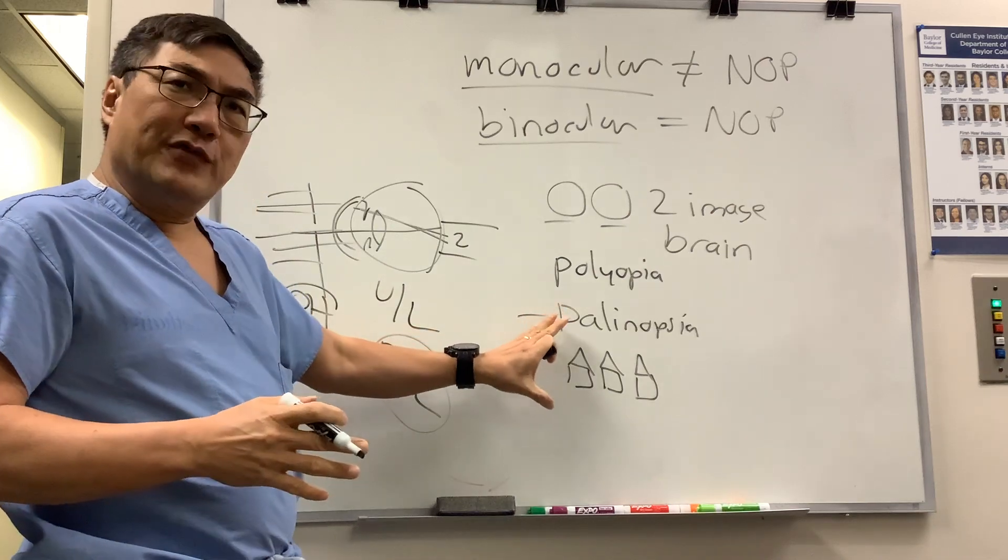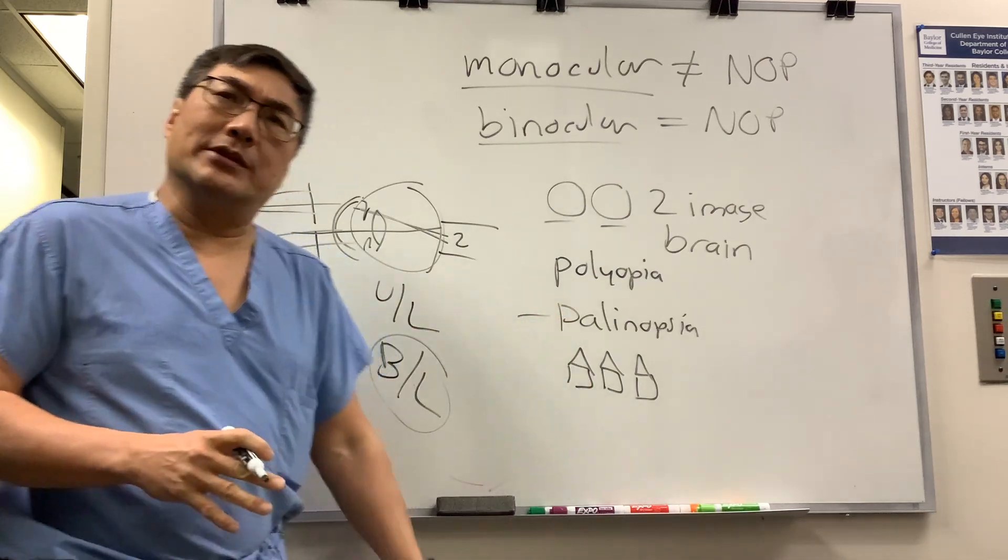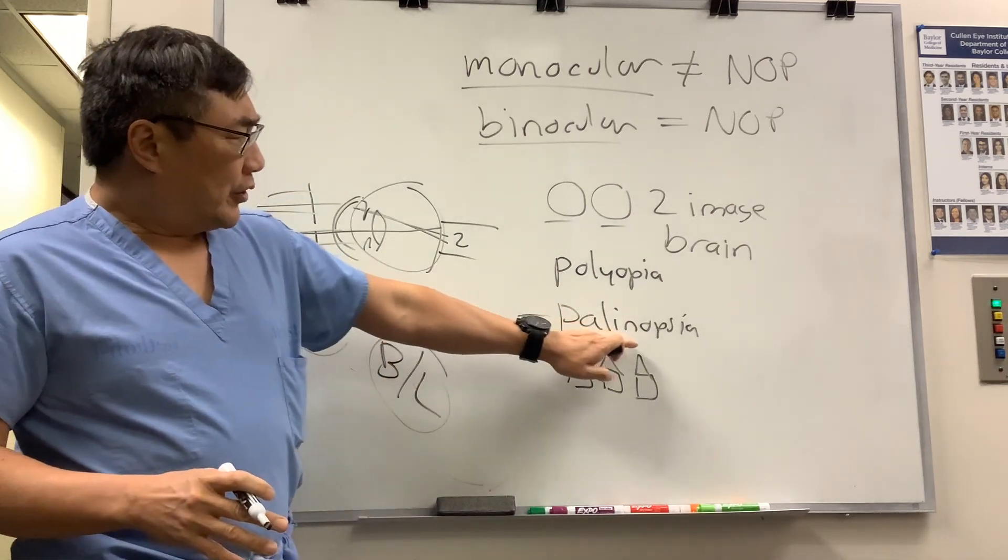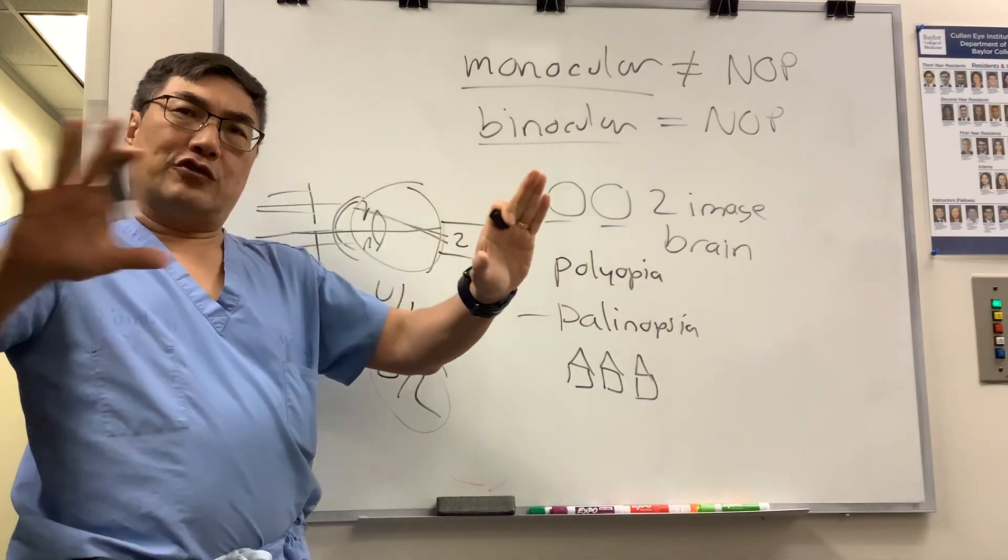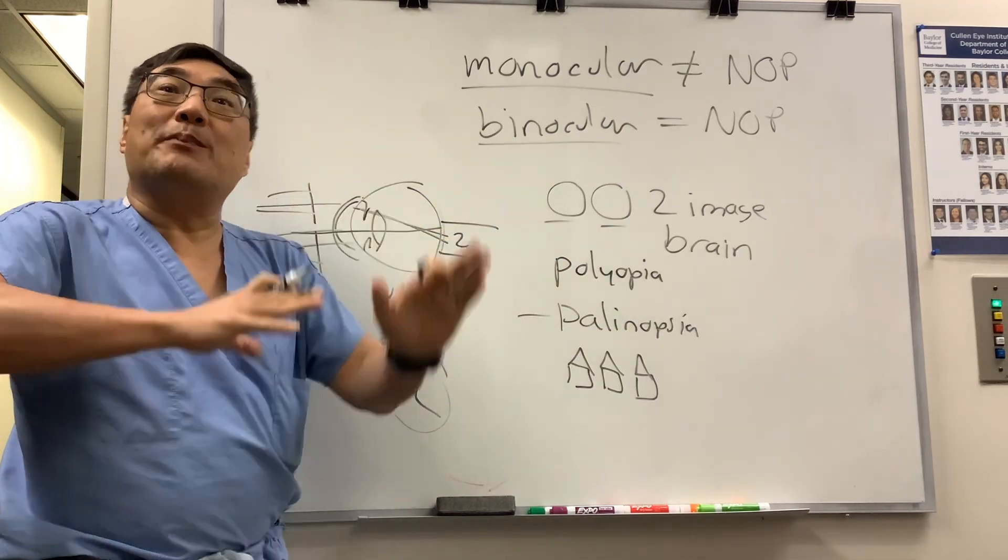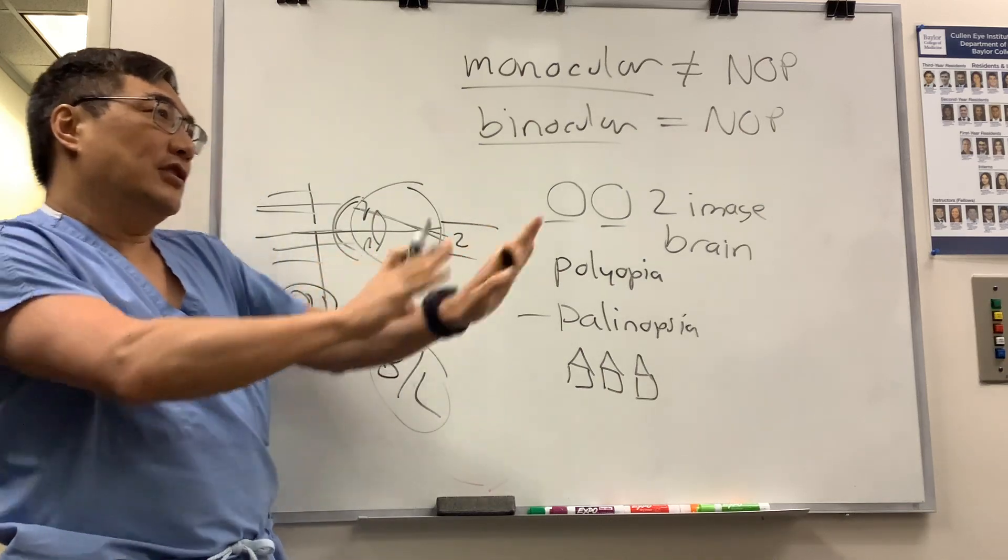We're going to do a visual field on this person, make sure they don't have homonymous hemianopsia. And you're going to try and differentiate whether it is a trailing after image and whether the image is repeating rather than just duplicated.